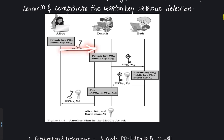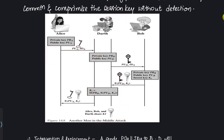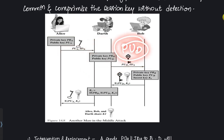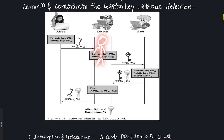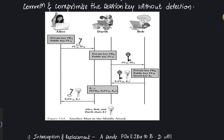First, A sends a message to B containing her public key PU_A and her identity ID_A. However, Dart intercepts this message. Instead of forwarding A's message to B, Dart manipulates it — he sends his own public key PU_D along with ID_A, pretending to be A. B does not realize the public key received is not A's but Dart's. So Dart is impersonating A.